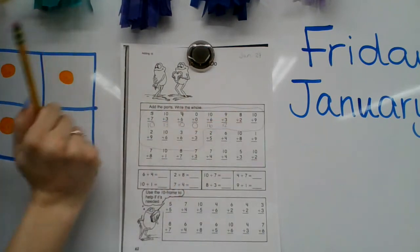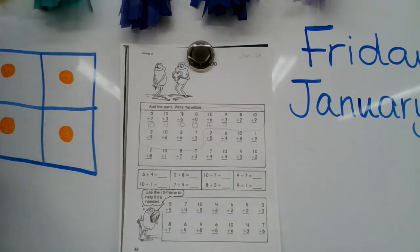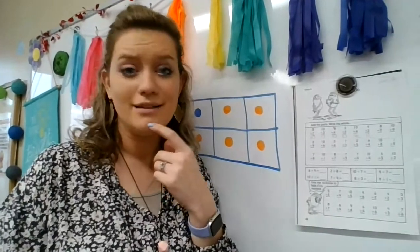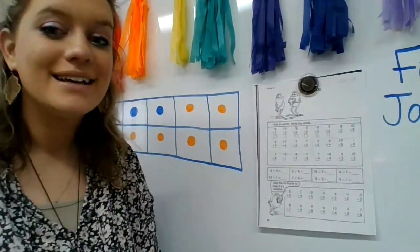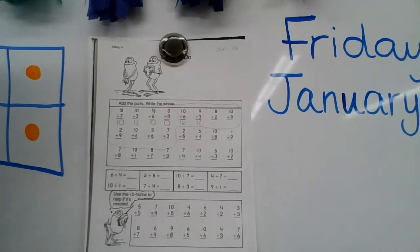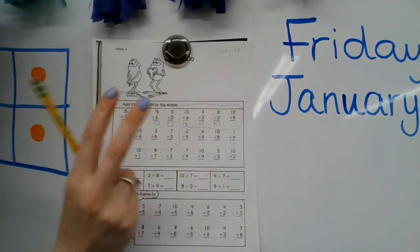8 plus 2. Those are good friends. What do they add up to make? Not to meet, to make. Silly Mrs. Durham. As soon as I said it, I said that didn't sound right. 8 plus 2. What do those add up to make? They make 10. 10 is their friend. 8 plus 2 is 10. Also is another quick count on. 8, 9, 10.